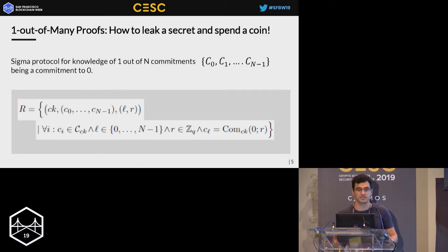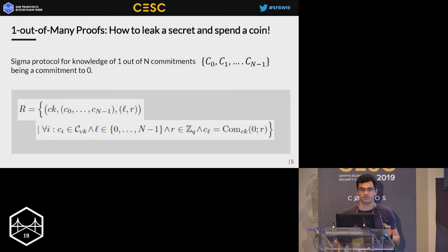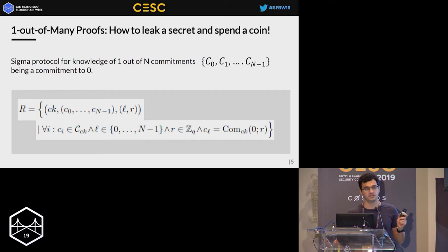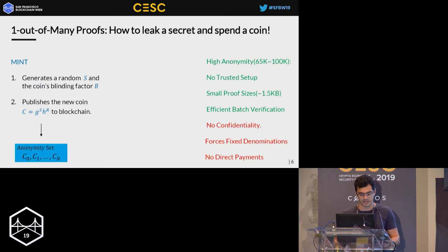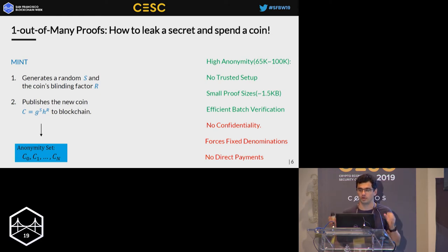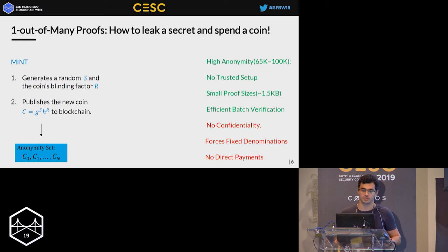One out of many proofs is a zero-knowledge protocol for knowledge of one out of n Pedersen commitments opening to zero, without revealing its origin. Having this cryptography, it's quite straightforward to build a Zerocoin-like functionality. The user can mint new coins as a Pedersen commitment — generating a coin serial number S and committing to it — and this Pedersen commitment is published to the blockchain.